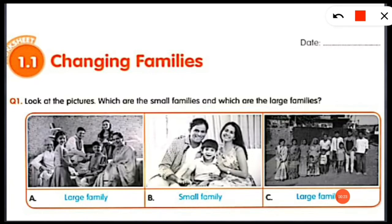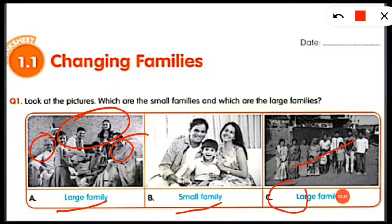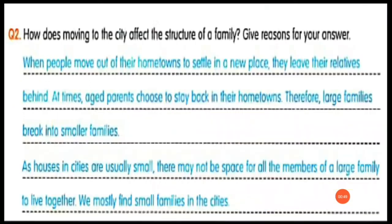The first picture has grandparents, parents, and children, so that's why it's a large family. In the second one there are only parents and a child, so this is a small family. In the third picture we have so many family members, so that's why it is also a large family. I hope that's clear.